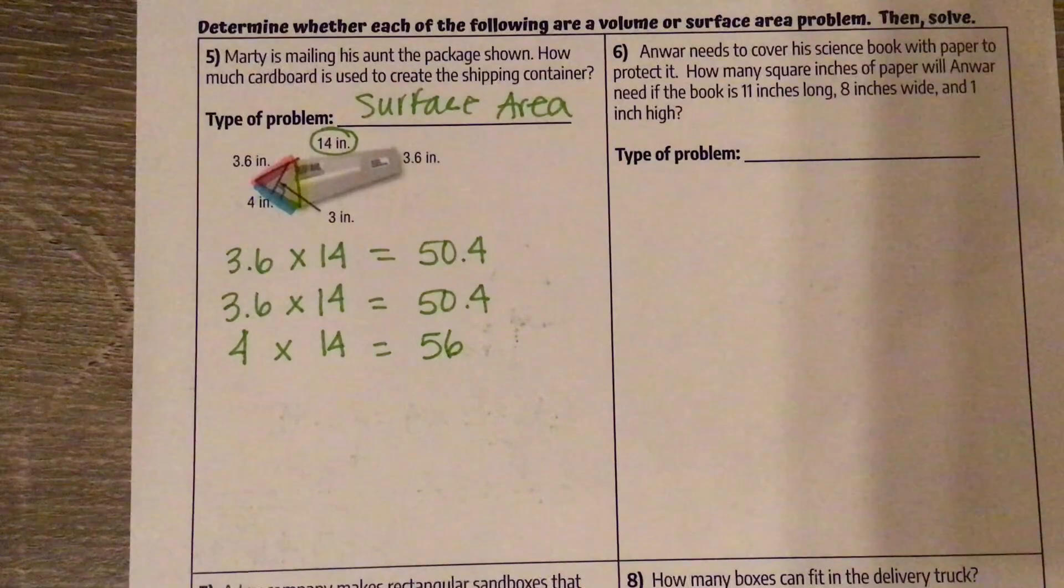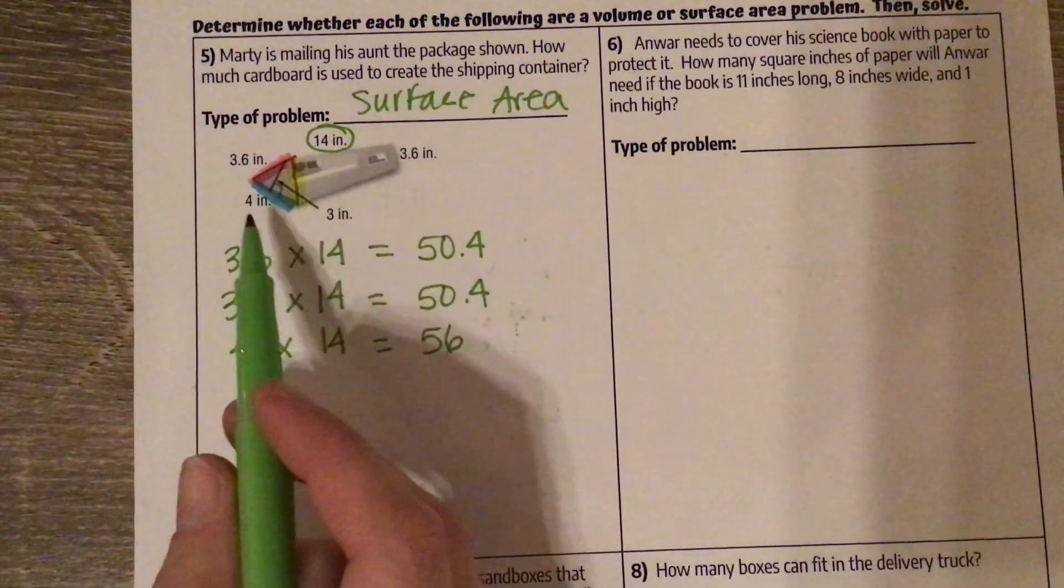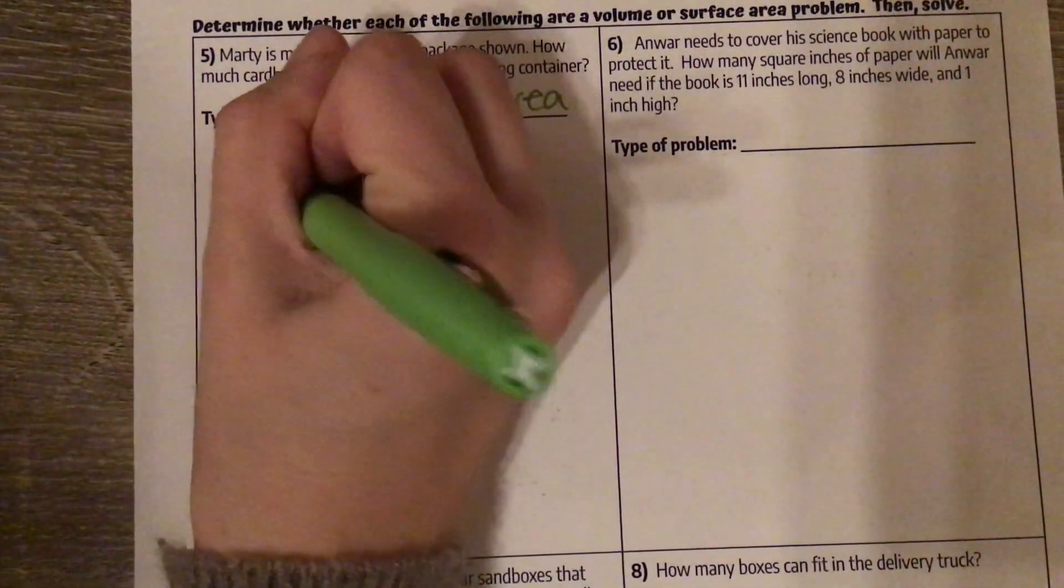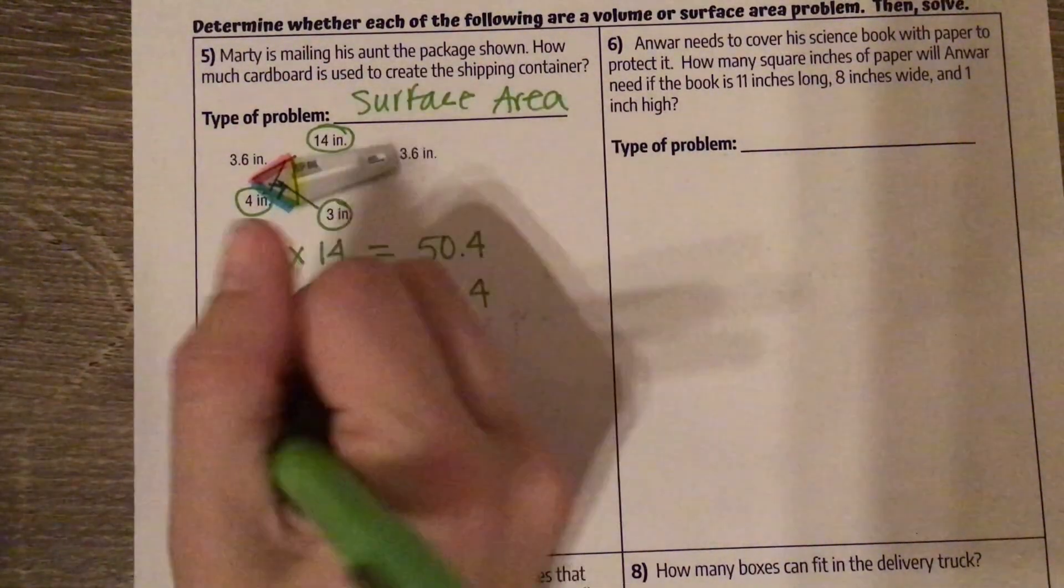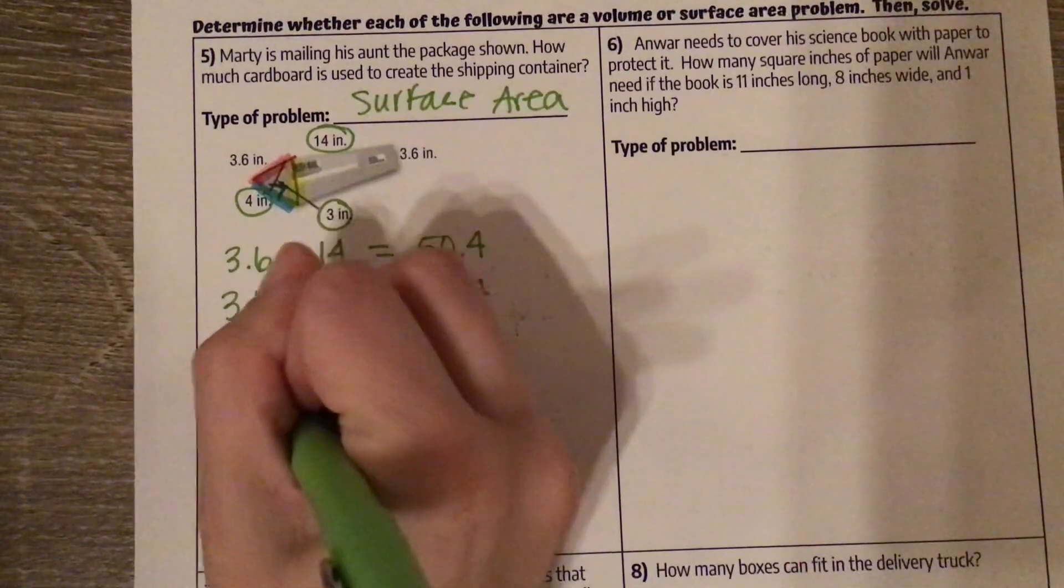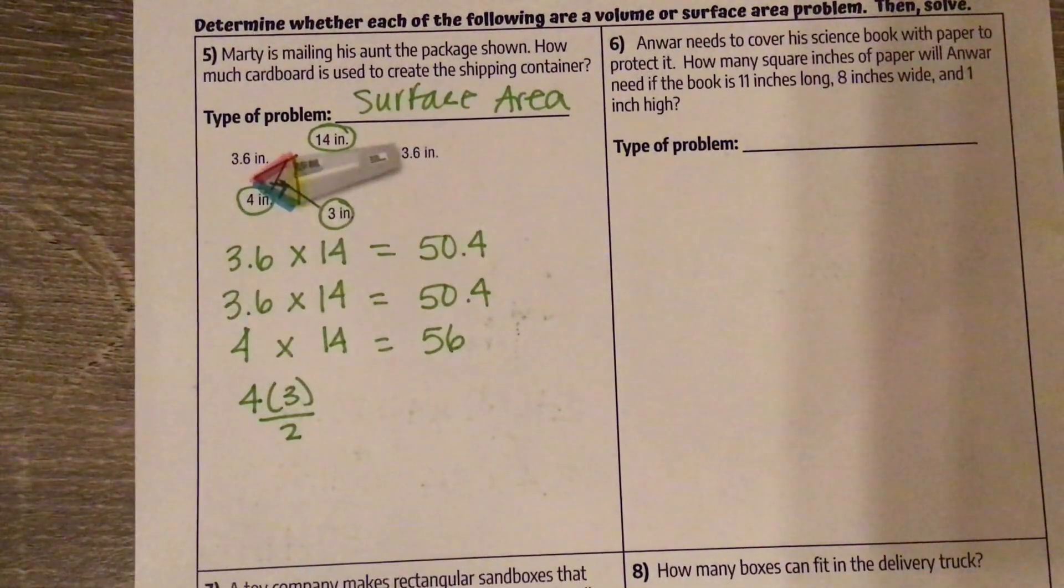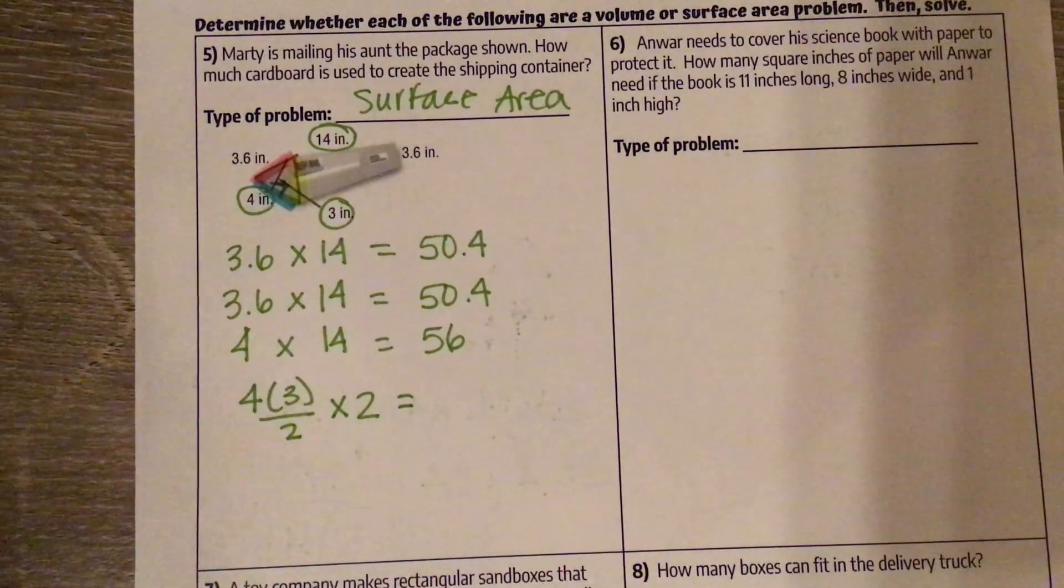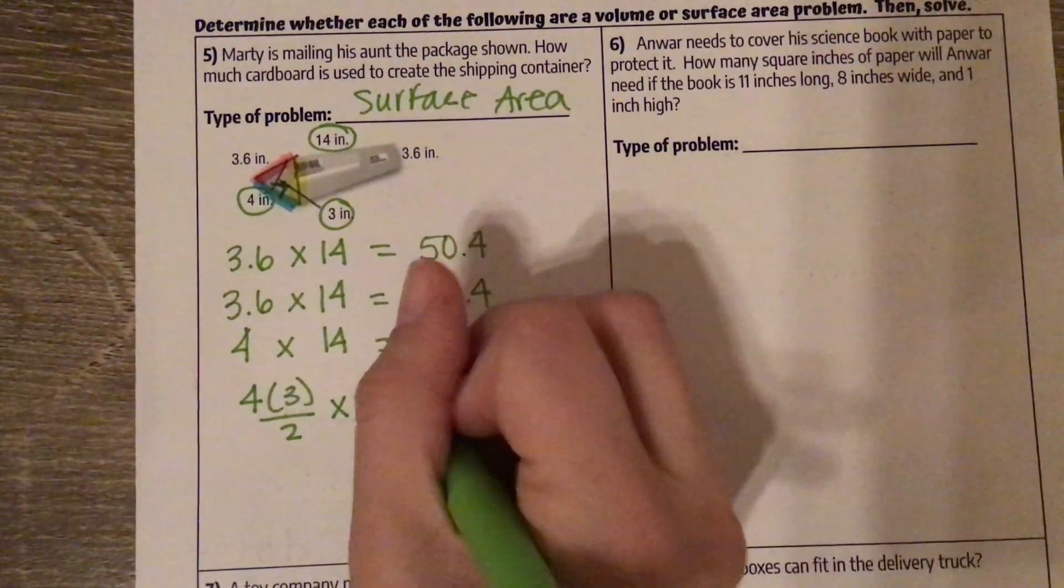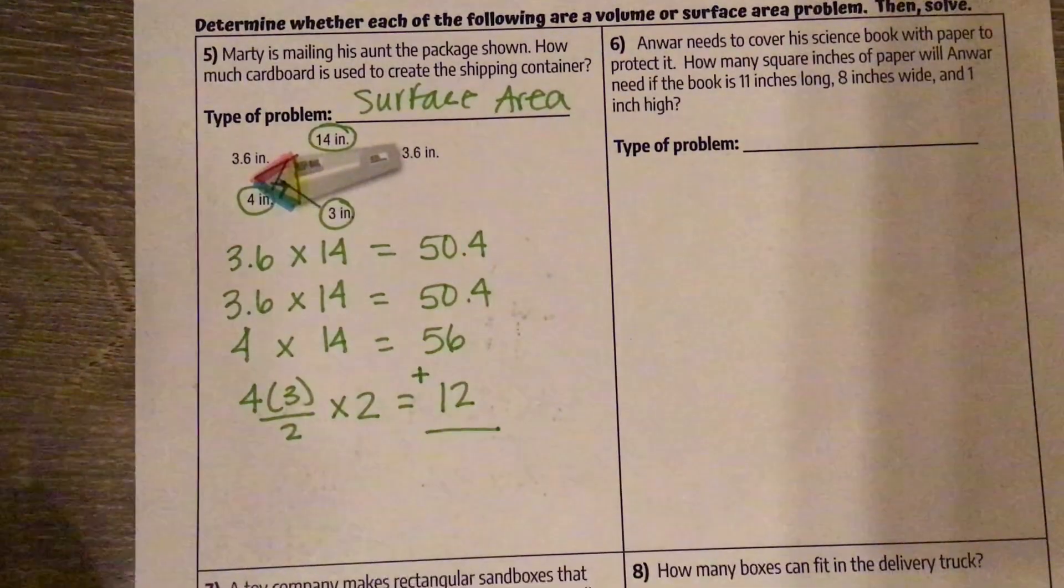And then the last part is we need our bases. So we have our triangle bases. The right angle is connecting 4 and 3. So we're doing 4 times 3 divided by 2. But there's two of those bases. So that's going to equal 12.